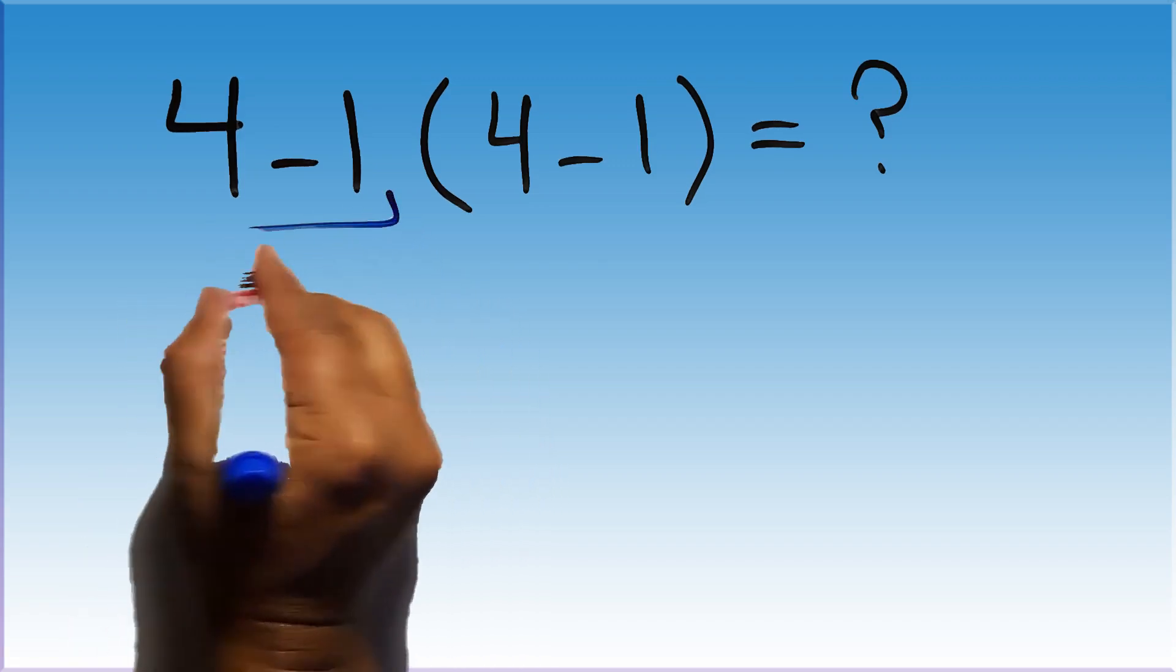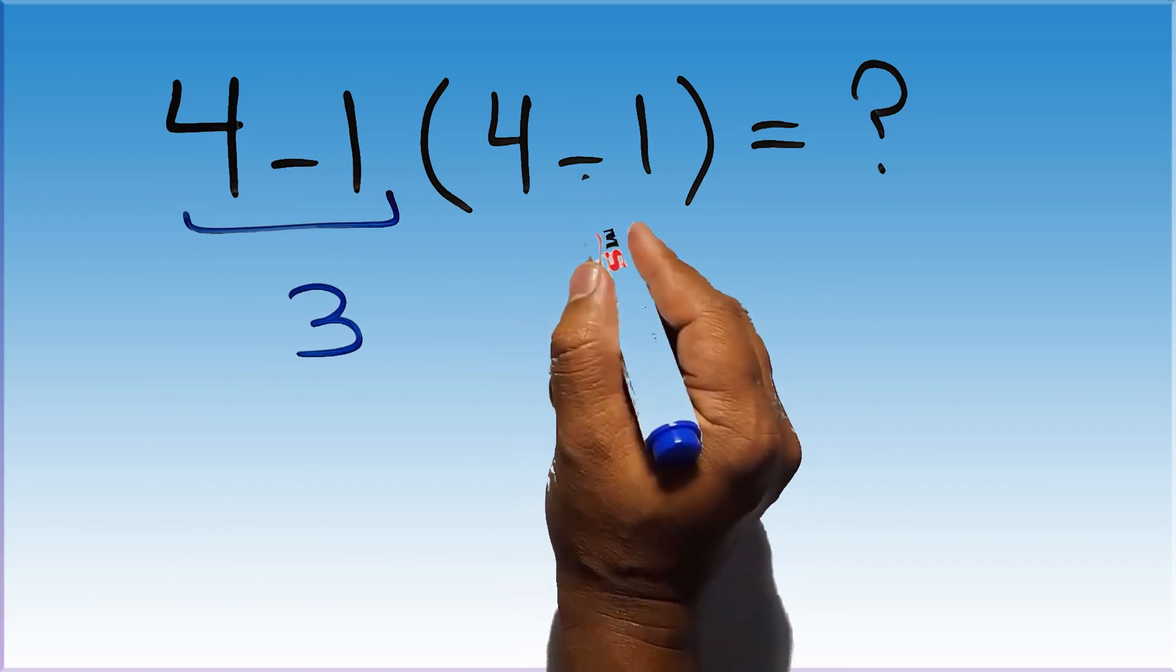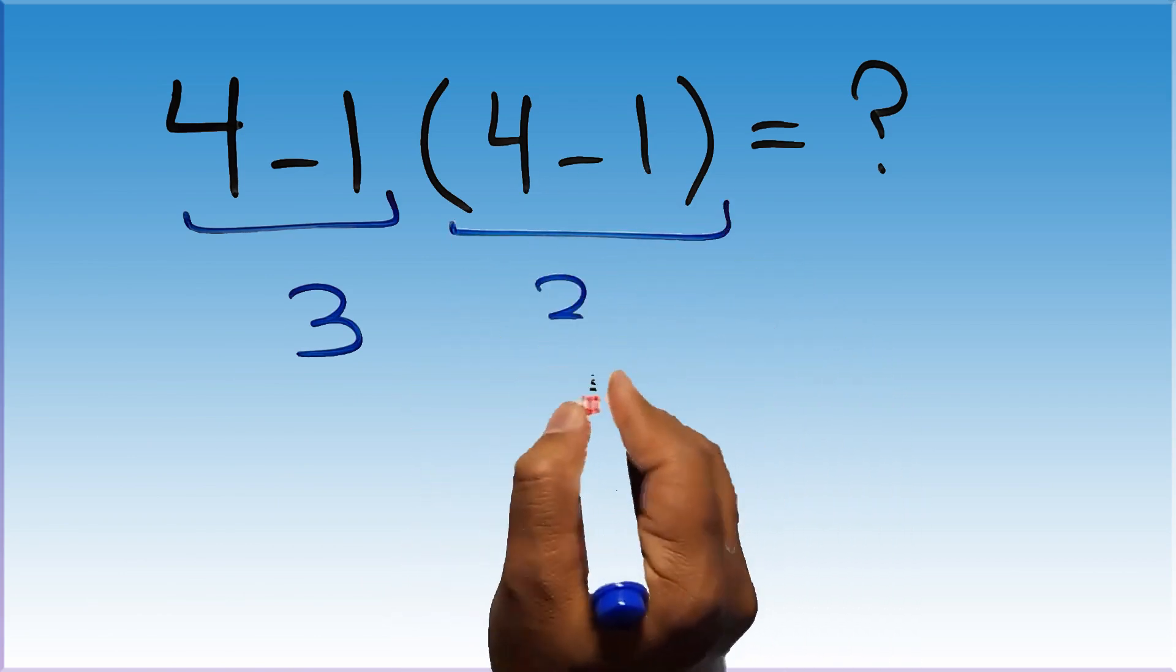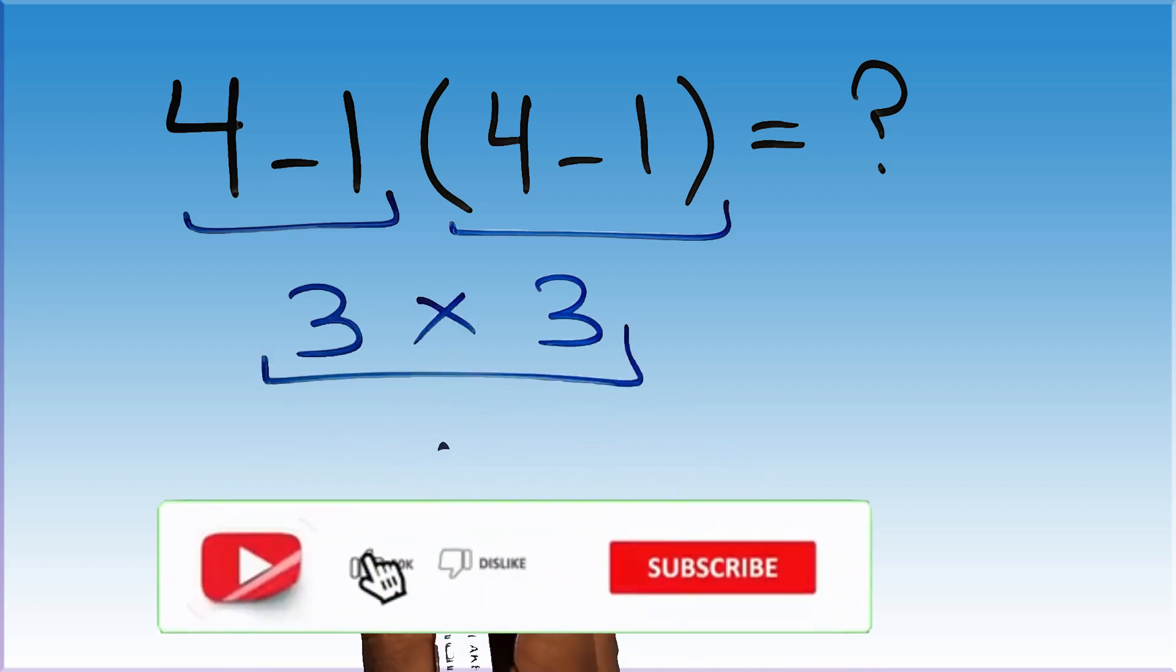4 minus 1 equals 3, and again here inside this parentheses we have 4 minus 1. So 3 times 3, which equals 9, but this answer is not correct.